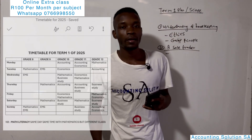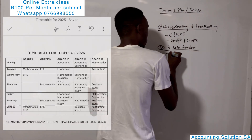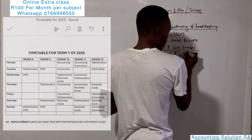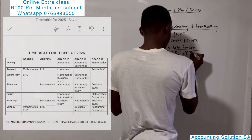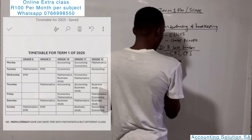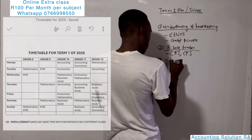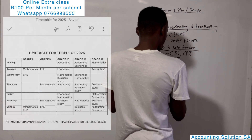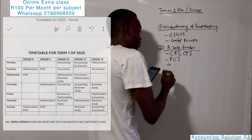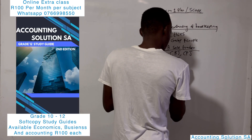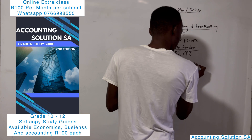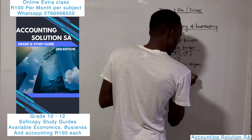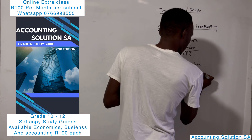In this topic you are going to prepare statements. For example, you will prepare the cash receipts journal, cash payment journal, petty cash journal, and also the general journal and the accounting equation.